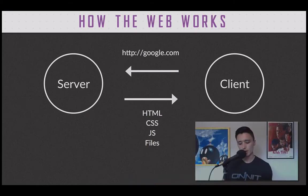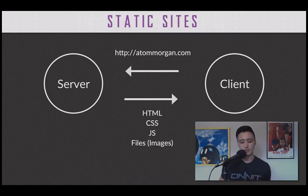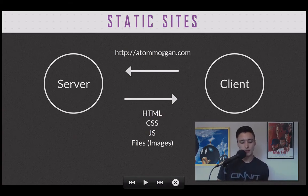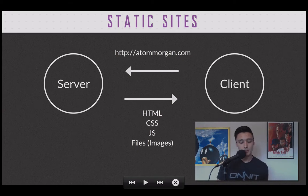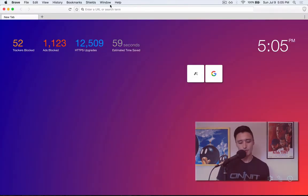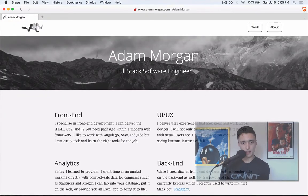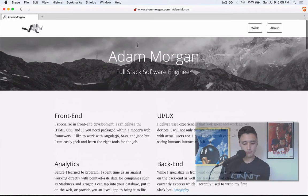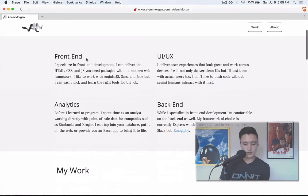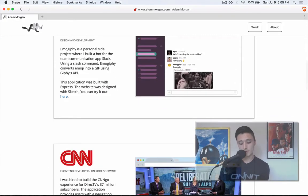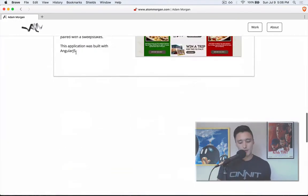To illustrate this, we'll use a website I built myself — my personal portfolio. We're going to request my portfolio at this URL, and the server should respond with some HTML, some CSS, some JavaScript, and some files like images. Going to the browser, typing in adamorgan.com, here you see the website I made for myself. We have the HTML you'd expect, an image here, some more images, a GIF.